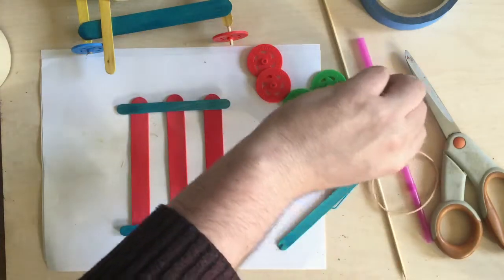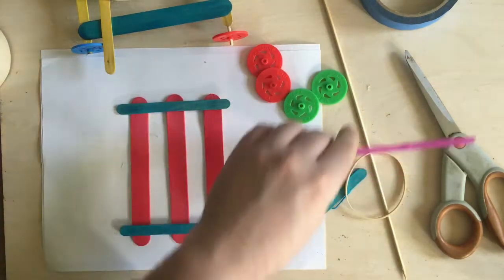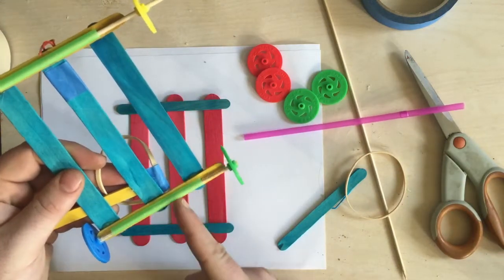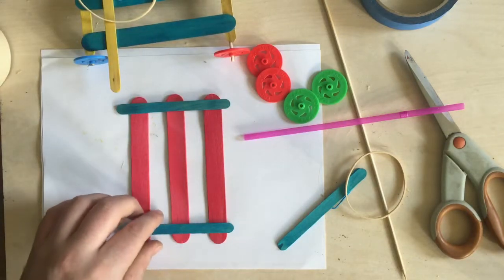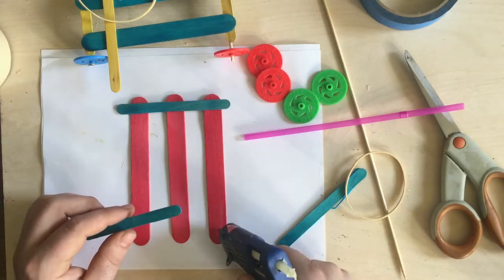And then widthwise, these smaller popsicle sticks are gonna be where my axles and wheels eventually rest. We're gonna use the straw to hold those in place. The straw we're gonna cut it up and attach it to the bottom of these, and then eventually put the axle and the wheels there.